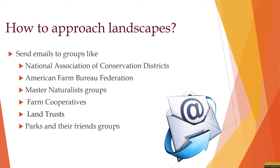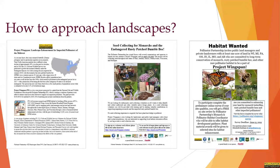We welcome any connections you may have to groups such as conservation districts, farm bureaus, master gardeners, master naturalists, farm cooperatives, land trusts, parks and their friend groups, and any other connections that might be interested in participating. State coordinators have been working with partners throughout the state to find suitable seed collection sites. But if you have a site you think might be interested in participating as a collection location, please let us know. Team leads are welcome to make these connections themselves through their network, and we will supply you with toolkit resources. We have several documents to help explain what Project Wingspan is and links set up for people or organizations to sign up as seed collection sites or volunteer seed collectors.